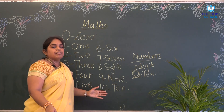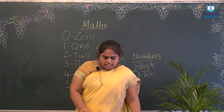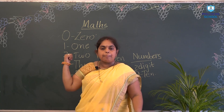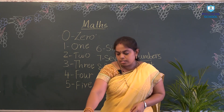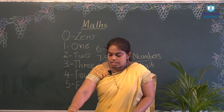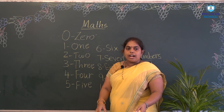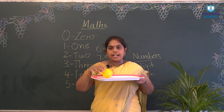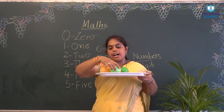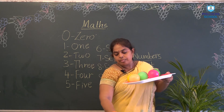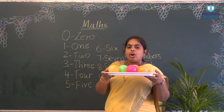What are all these numbers and digits used for? We use them for counting. I will show you something — these are balls. We can use numbers to count them: 1, 2, 3, 4, 5, 6, 7, 8, 9, and 10. So how many balls do we have? 10 balls.